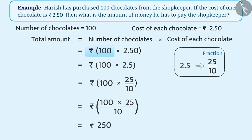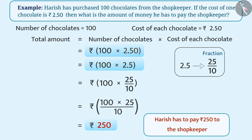If we carefully look at 100 multiplied by 2.50 equals 250, we can find that the number of digits in the answer and the given decimal number are the same, but the decimal point has shifted two places towards the right. Thus, we can say that if any decimal number is multiplied by 100, then the decimal point is shifted two places to the right to obtain the answer. That means Harish has to pay Rs. 250 to the shopkeeper.